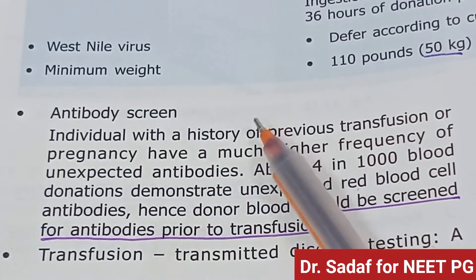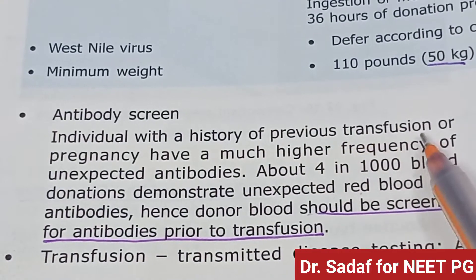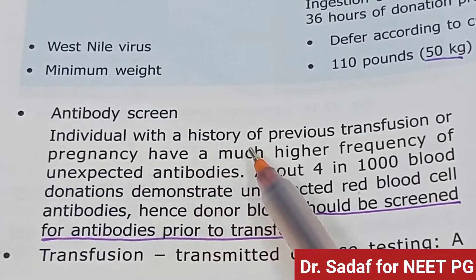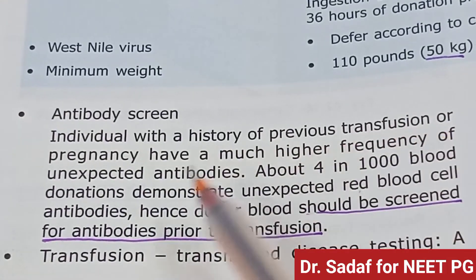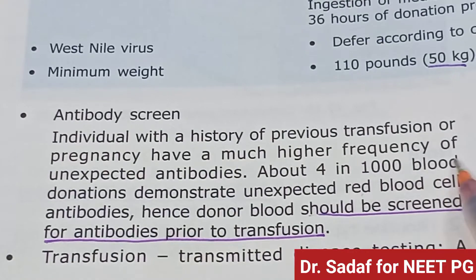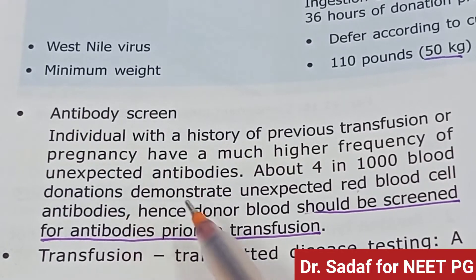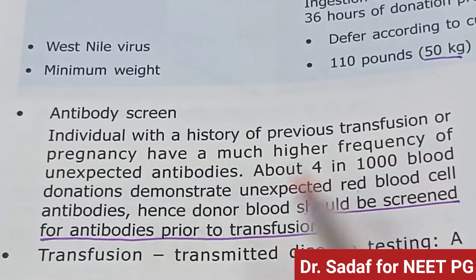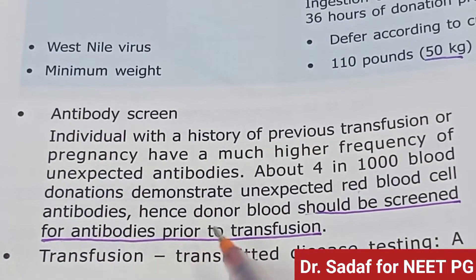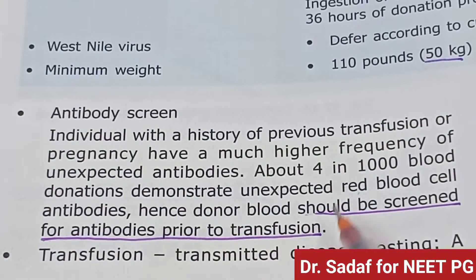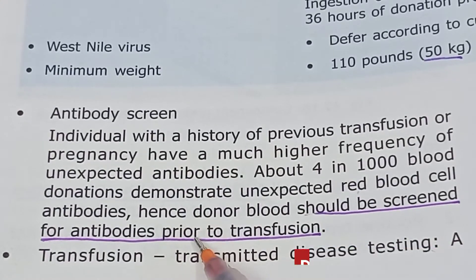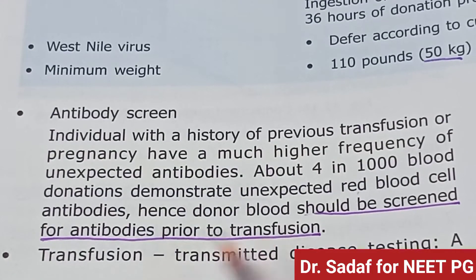Antibody screen: individuals with a history of previous transfusion or pregnancy have a higher frequency of unexpected antibodies. About 1 in 4,000 blood donations demonstrates unexpected red blood cell antibodies. Therefore, donor blood should be screened for antibodies prior to transfusion.